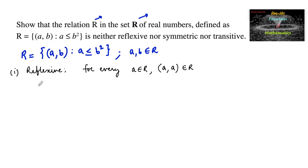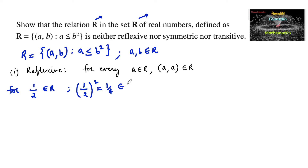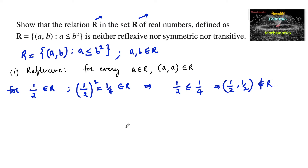Consider the element 1/2, which belongs to the real numbers. We have (1/2)² = 1/4, but 1/2 is not less than or equal to 1/4. So for this element, the condition is not satisfied. (1/2, 1/2) does not belong to the relation, and hence the given relation R is not reflexive.